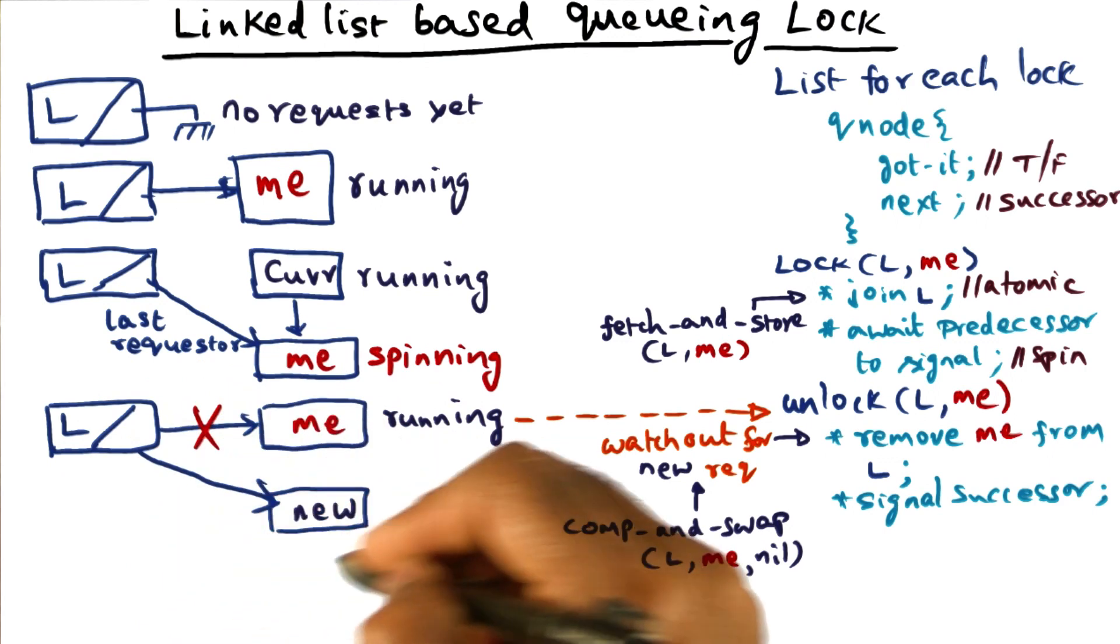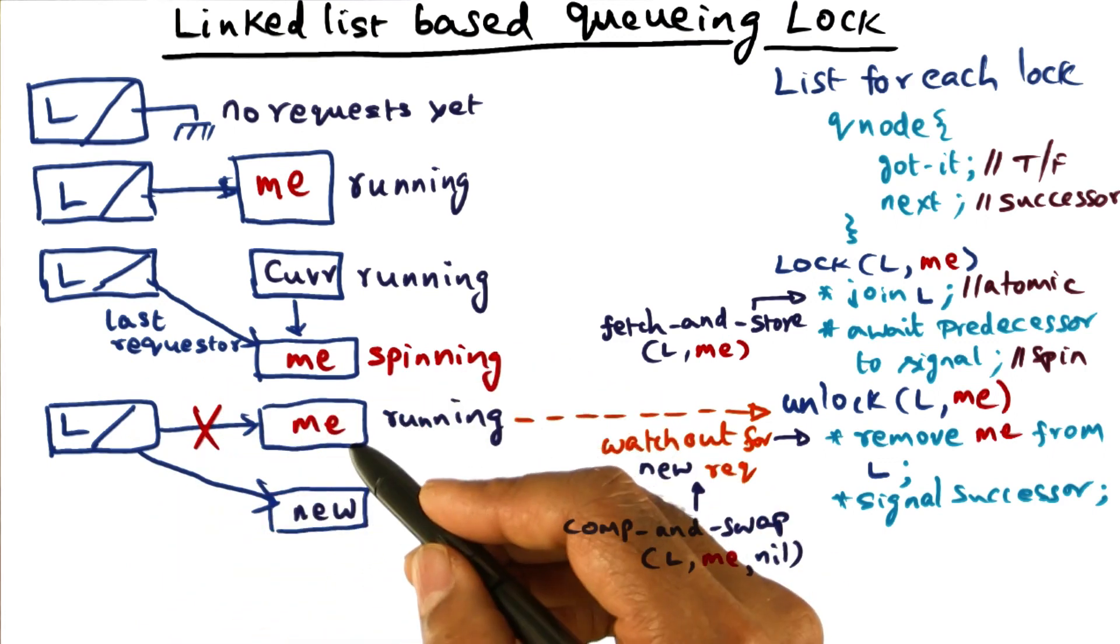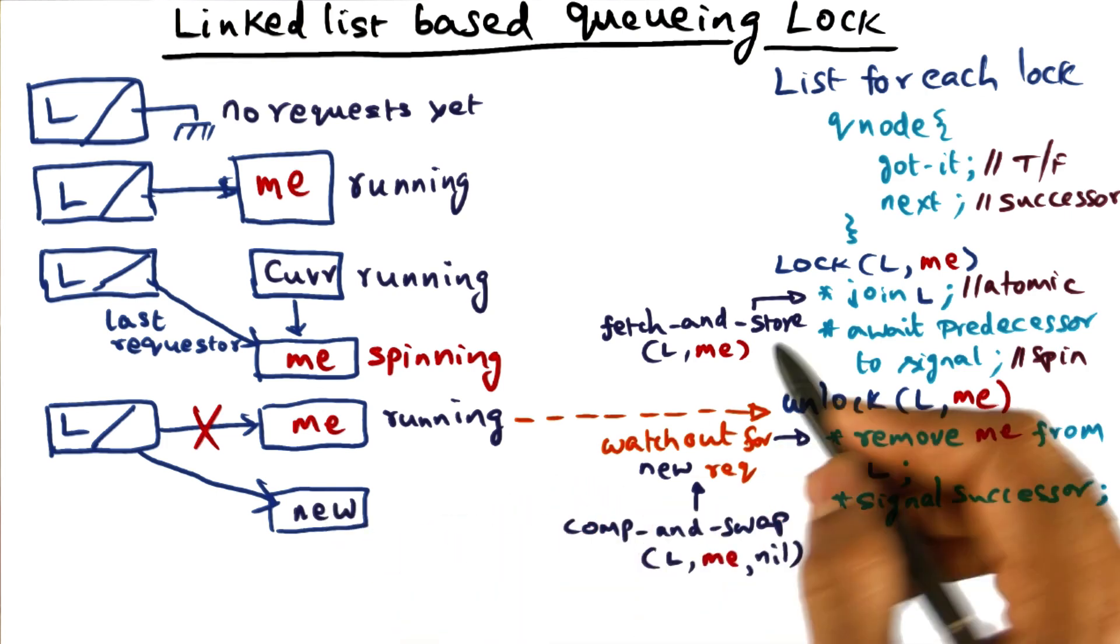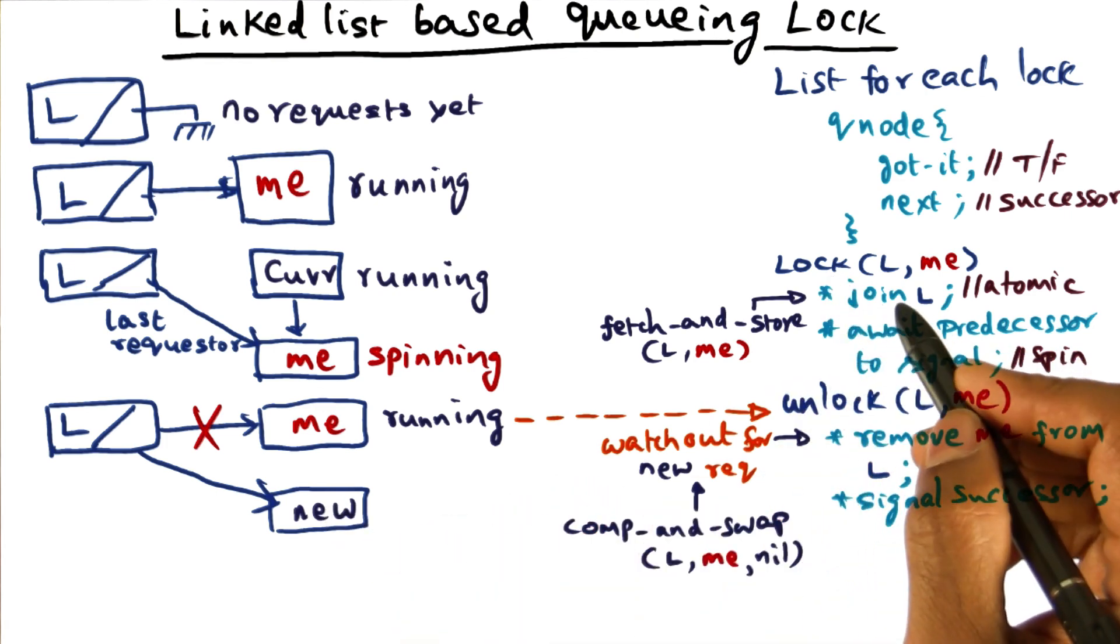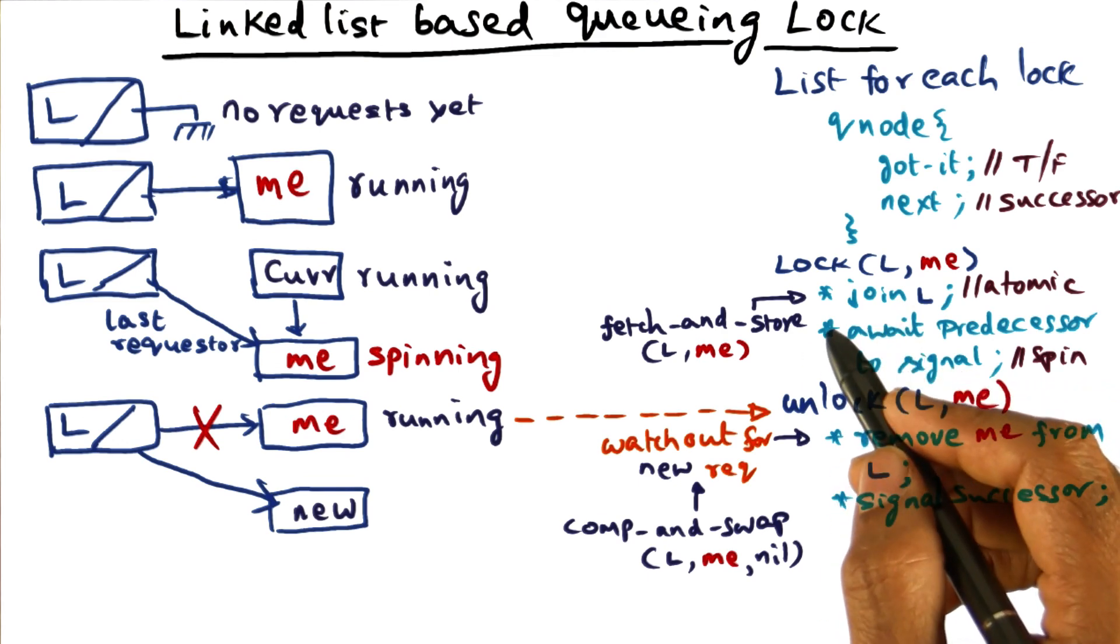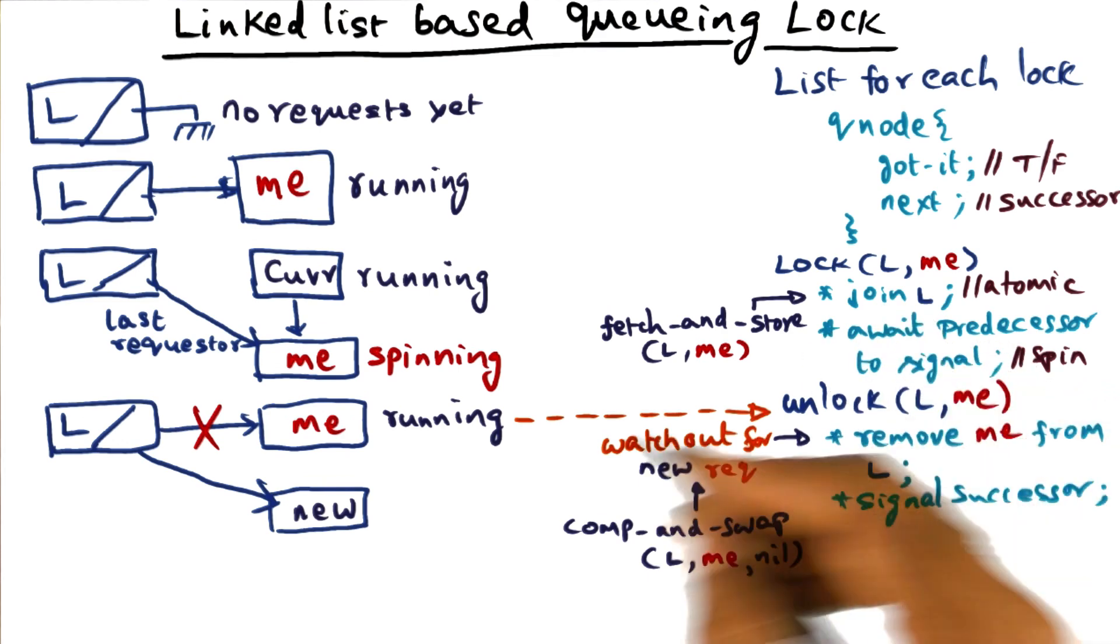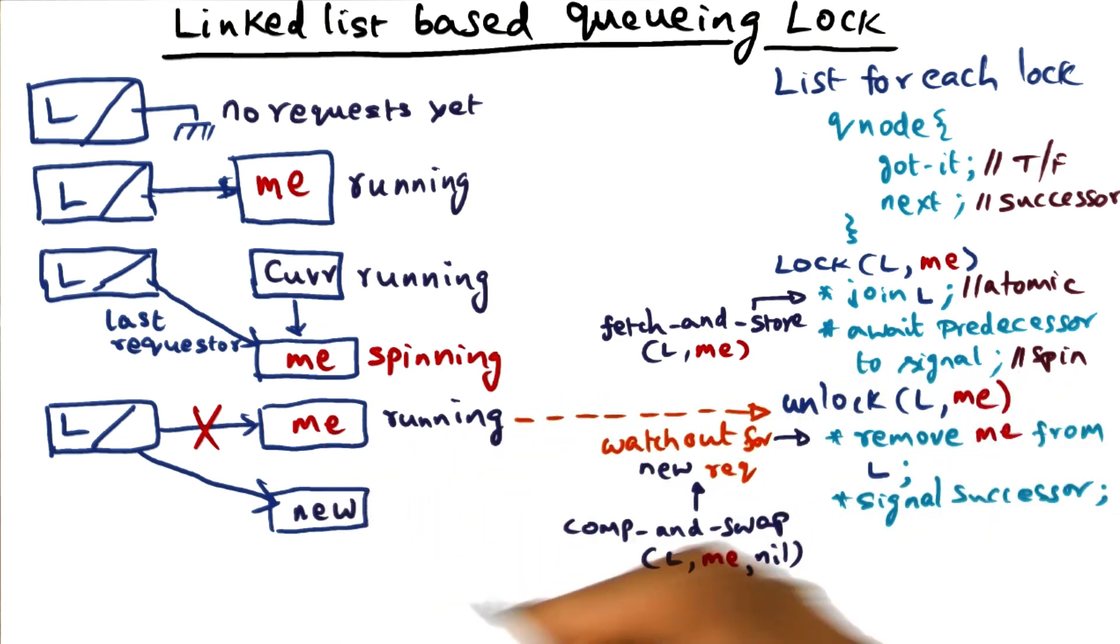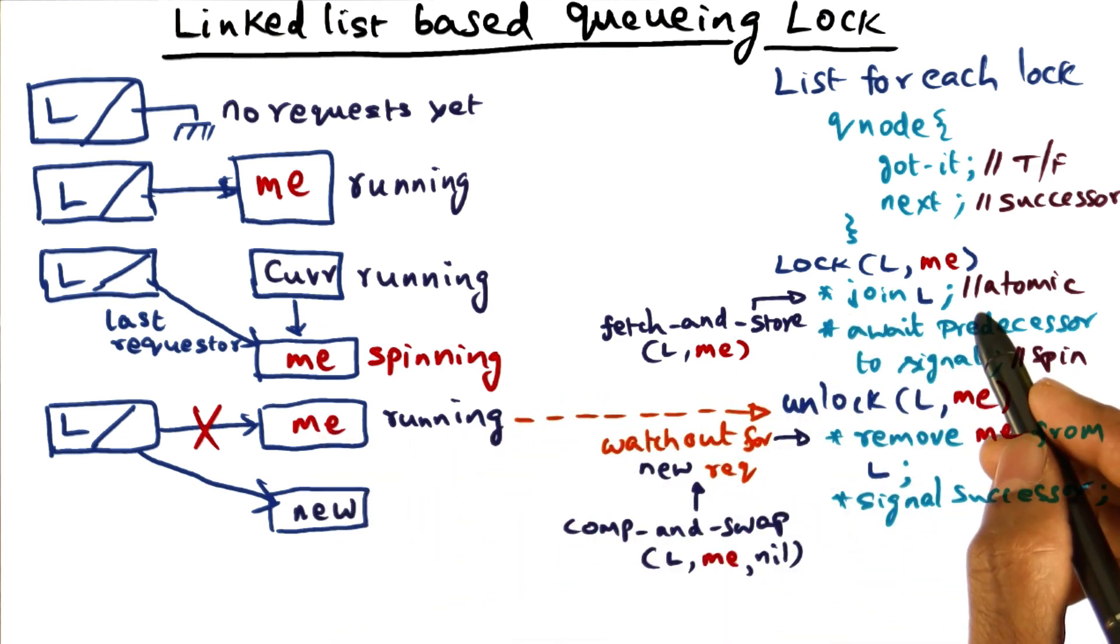So in this particular example that I'm showing you, when I try to do this unlock operation, a new guy has come in and he's executing halfway through his lock algorithm. So he's done the fetch-and-store, and he's going to set up the list so that my next pointer will point to him. That's the process that he is in right now.